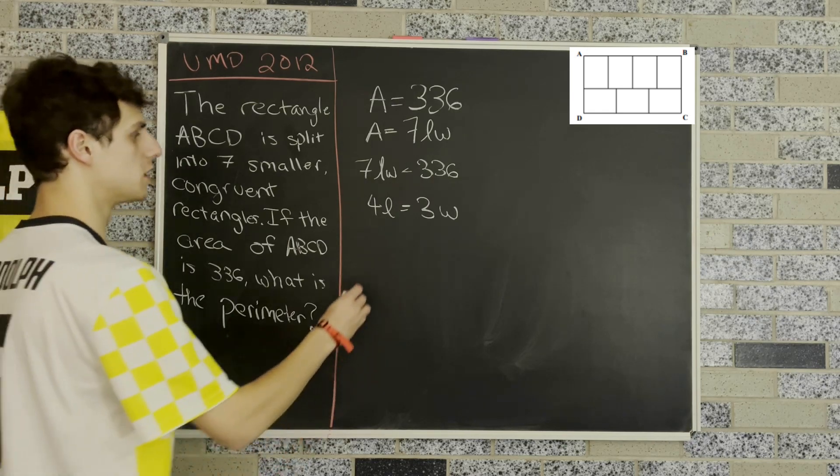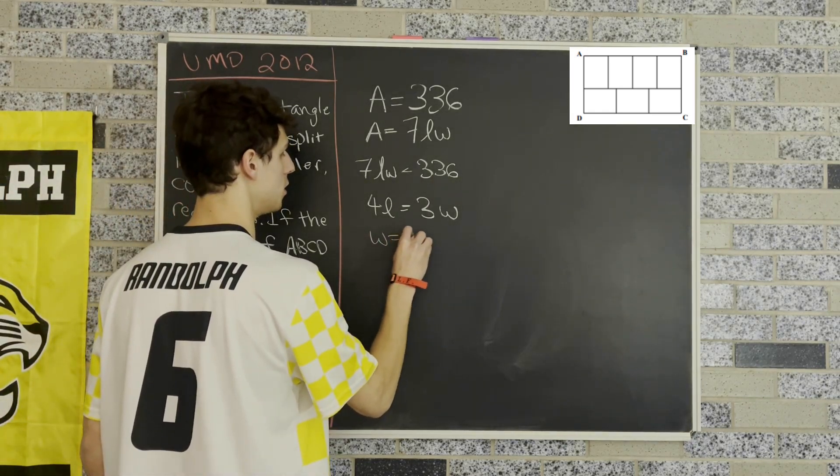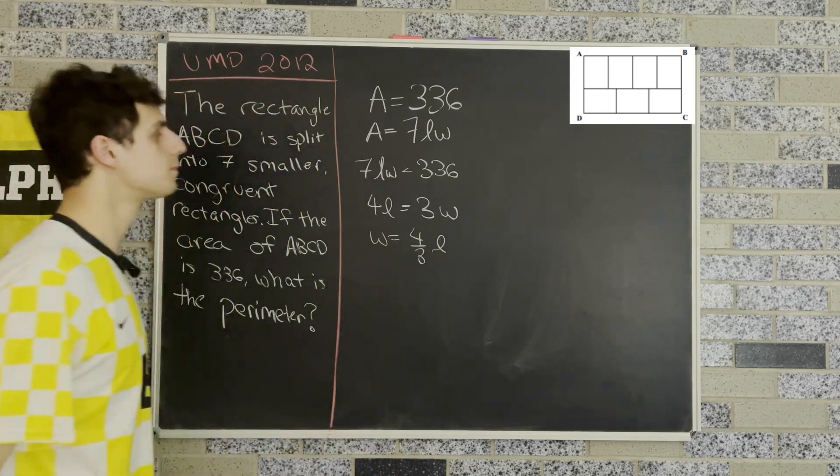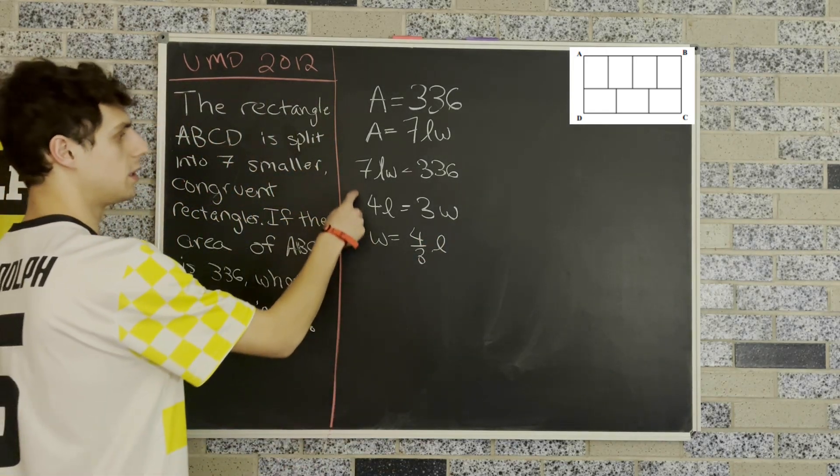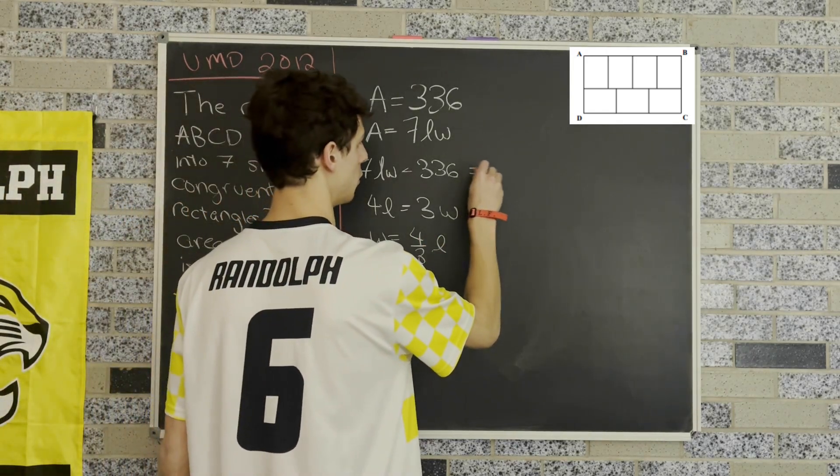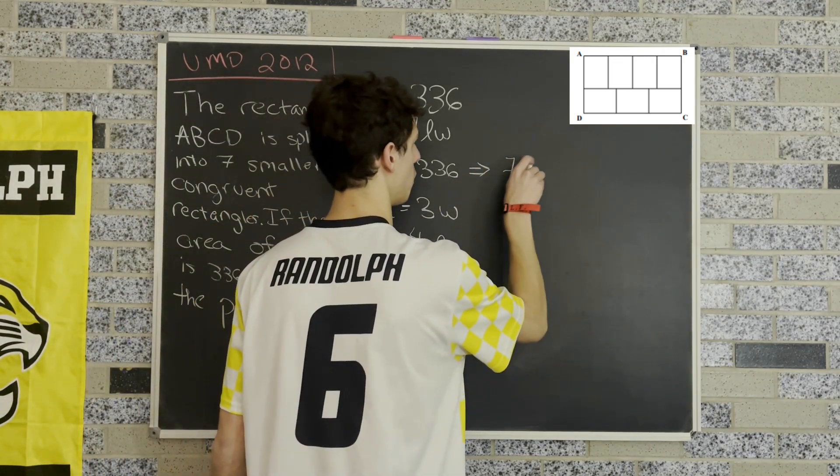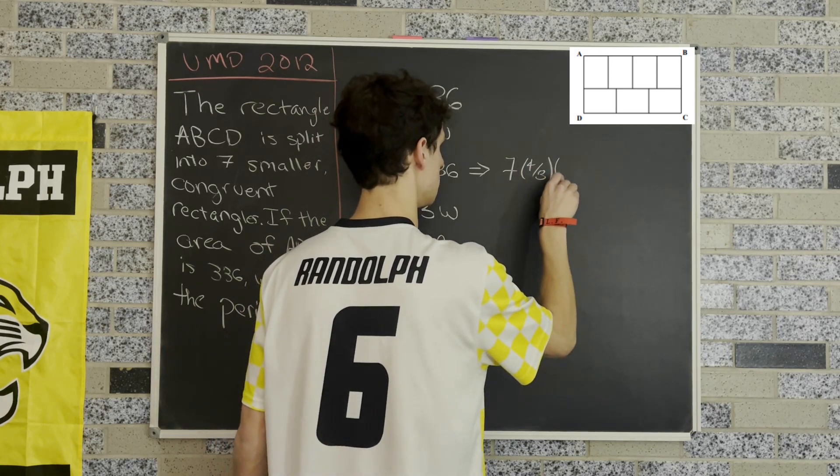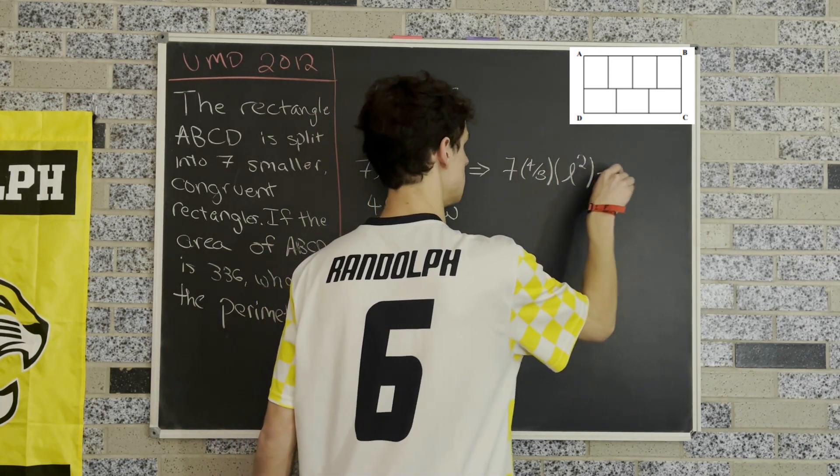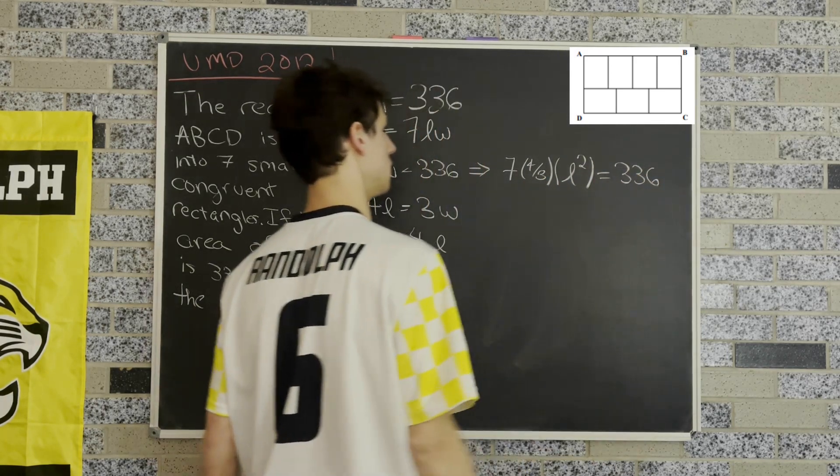Now using substitution, we find that w equals four-thirds length. Substituting this back into our original equation, we get seven times four-thirds times L squared equals 336.